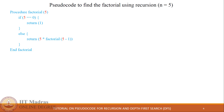5 is not equal to 0, so we execute the else block. Inside the else block, the return statement is 5 multiplied by factorial of 5 minus 1, which generates another procedure call with n equal to 4.